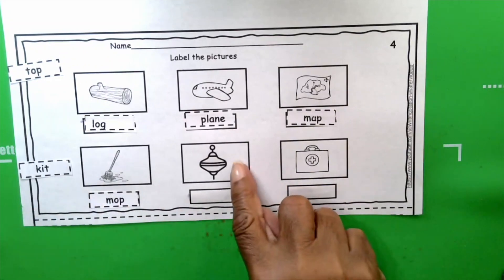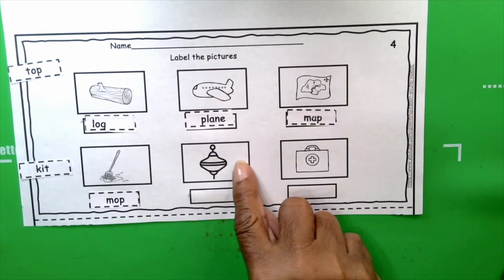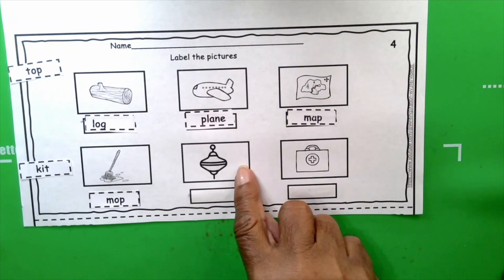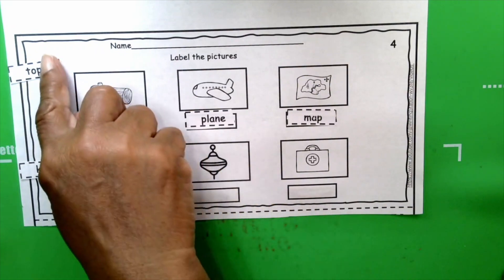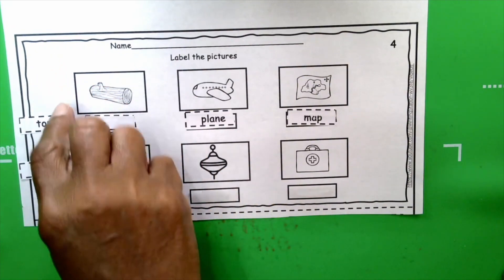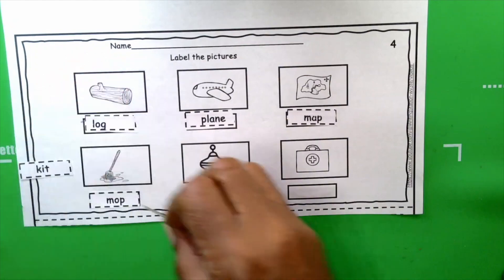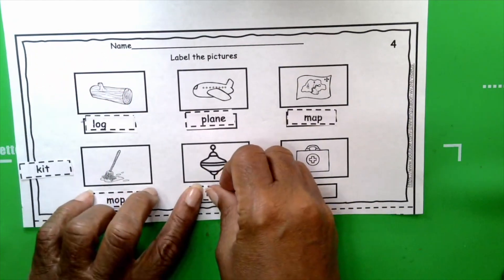The next word is top. What's the beginning sound for top? T. What letter is that? T. T-O-P. Top. Very good. T-O-P.